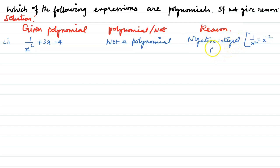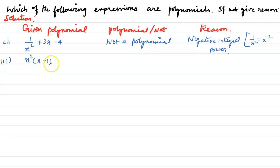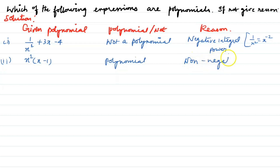Second question: x² times (x - 1). This is a polynomial: x³ - x². It has non-negative integral powers.